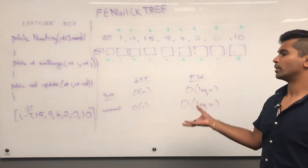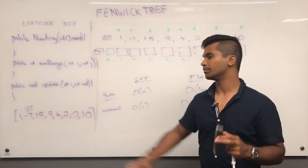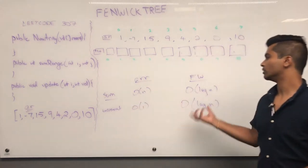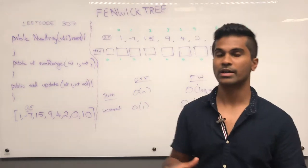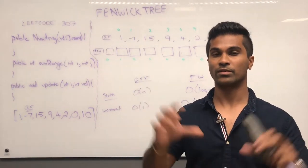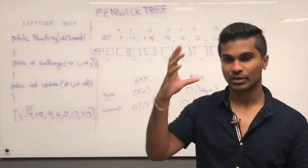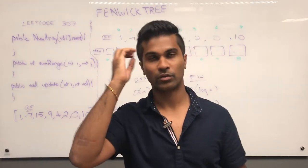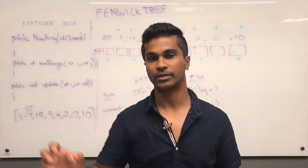If the array is really long, if there are constantly changes being made to the array and we're still trying to query the sum, that's when we would use a Fenwick Tree. The cool thing about a Fenwick Tree array is that it doesn't use any additional space apart from the Fenwick Tree array itself. And even though it's called a Fenwick Tree, the data structure is actually an array.